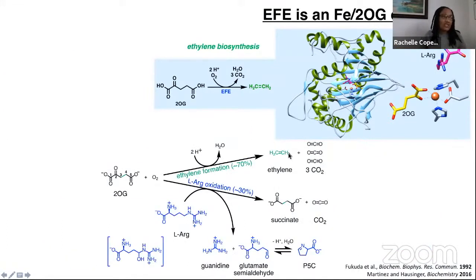The majority of the time it produces ethylene, which does not involve transforming L-arginine. But 30% of the time, it does another reaction wherein it converts 2-OG to succinate and CO2 and uses the oxidizing equivalents from that step to affect the two-electron oxidation of L-arginine. The observed products of this are guanidine and glutamate semialdehyde, which we detect as C5C.